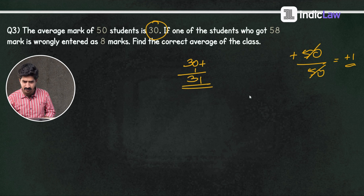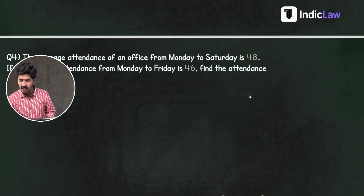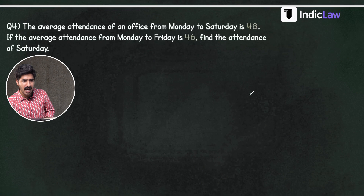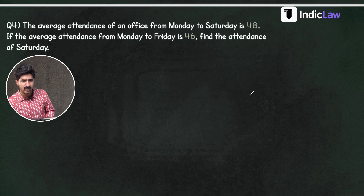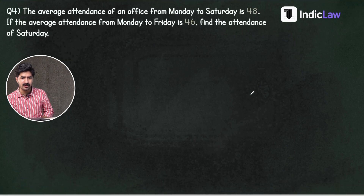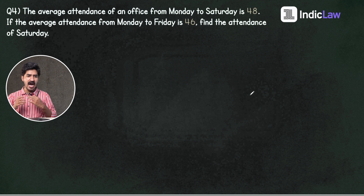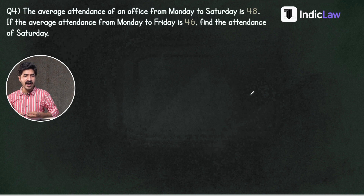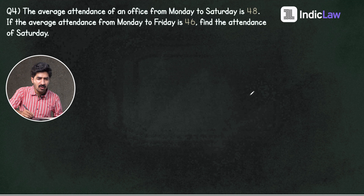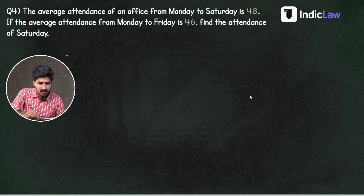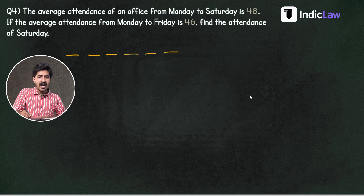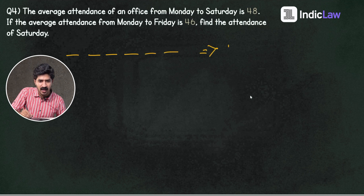What is the next question? The average attendance of an office from Monday to Saturday is 48. If the average attendance from Monday to Friday is 46, find the attendance of Saturday. How many days from Monday to Saturday? 6 days: 1, 2, 3, 4, 5, and 6. These 6 days combined have an average of 48.